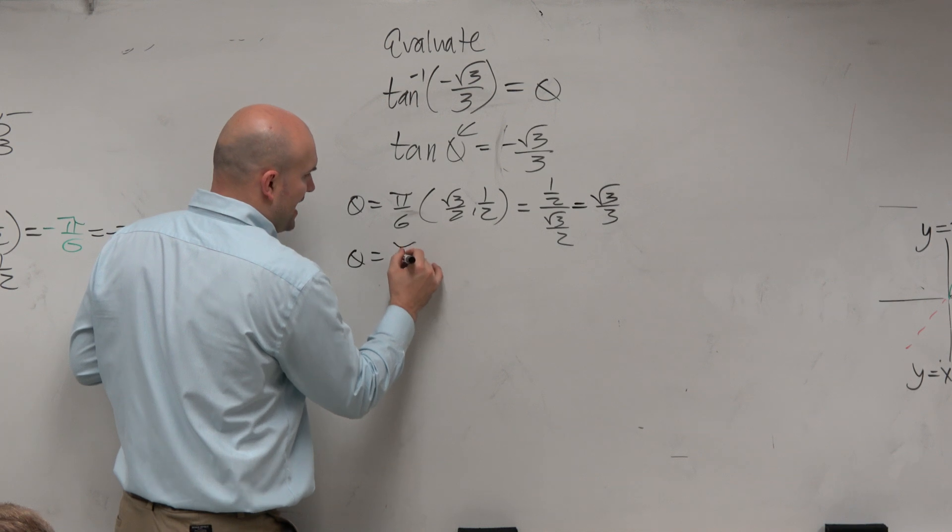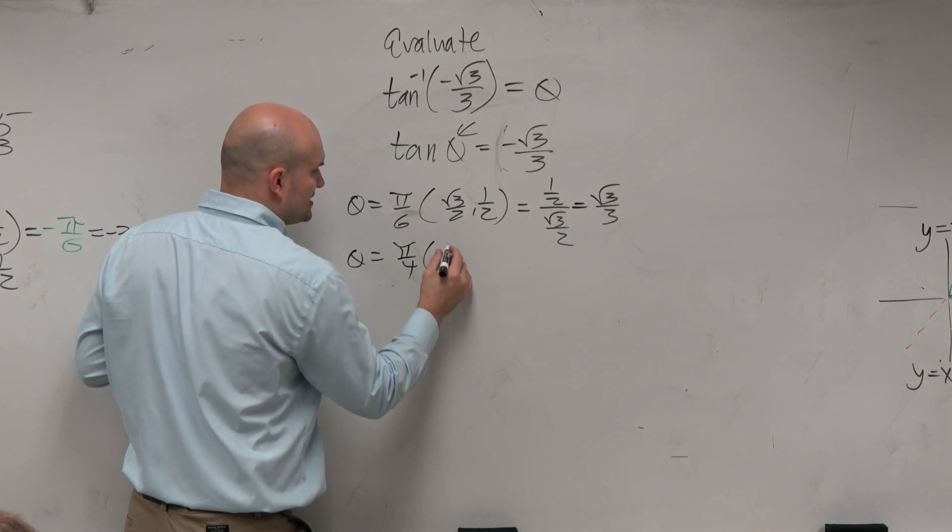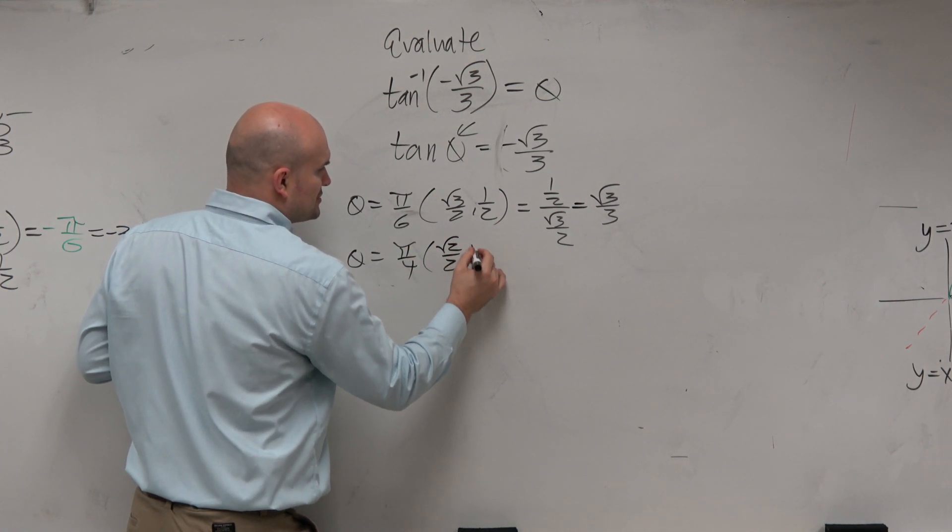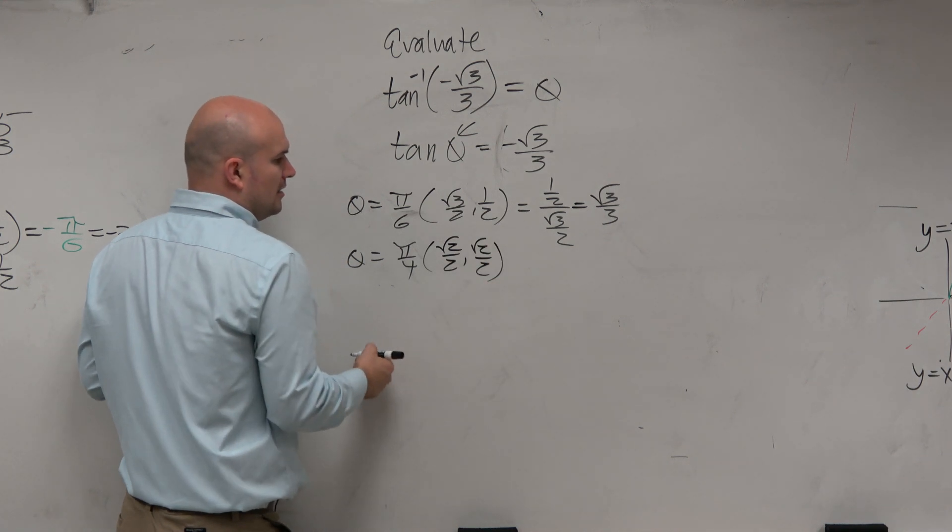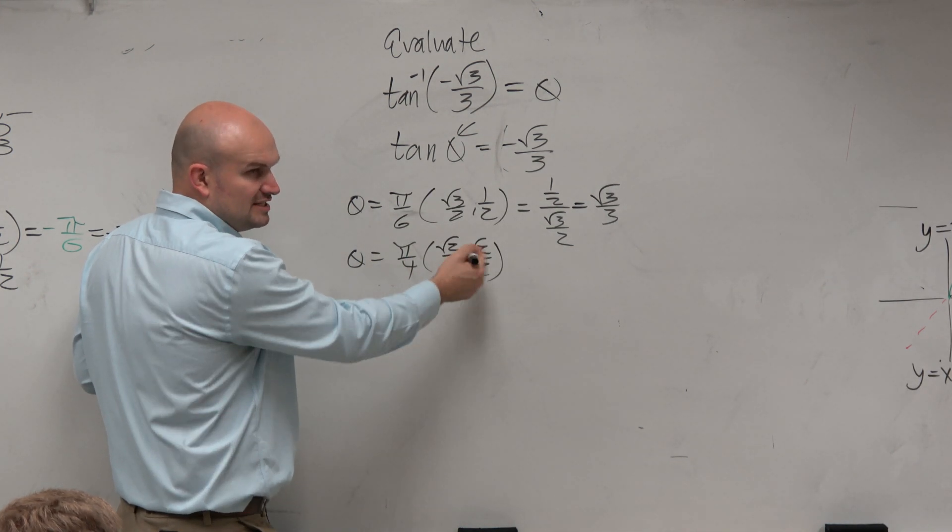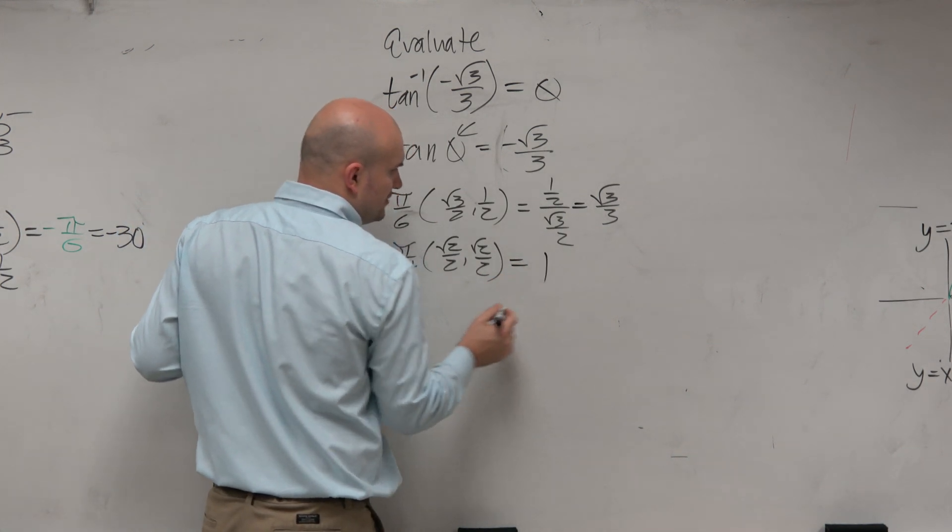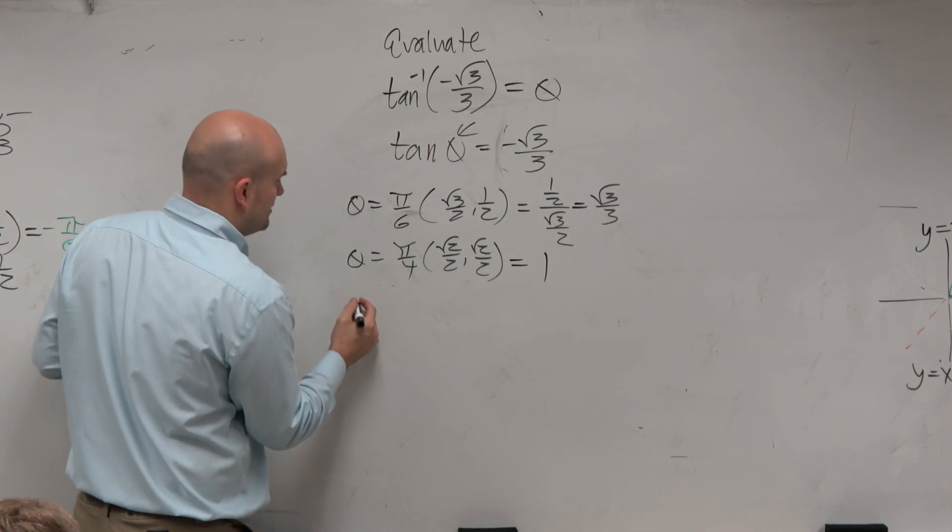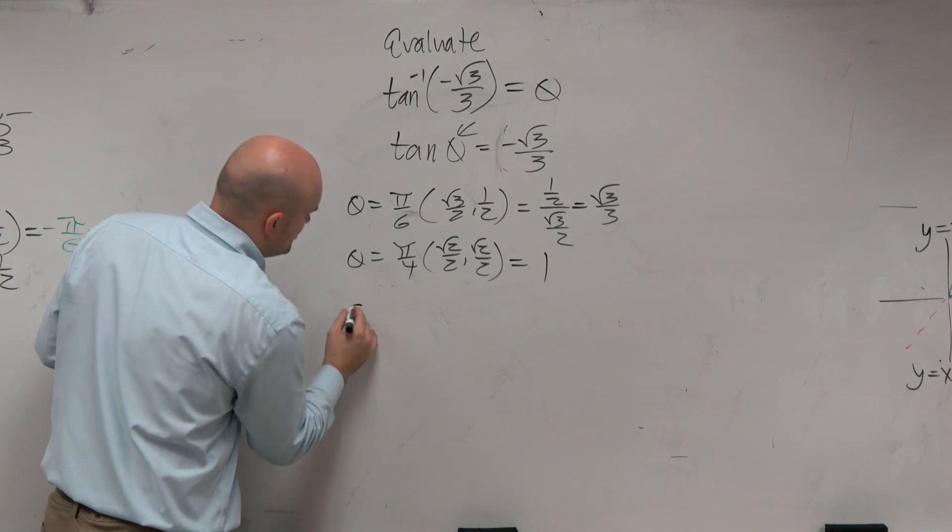When you go ahead and work on pi over 4, and you get square root of 2 over 2, comma, square root of 2 over 2, once you've probably figured out pi or tangent, these are the same over the same, you get 1, then you just kind of keep it right there. And then, oh, let's just do pi over 3 real quick.